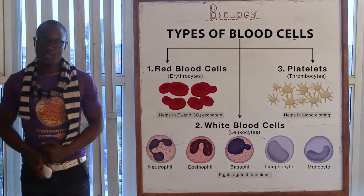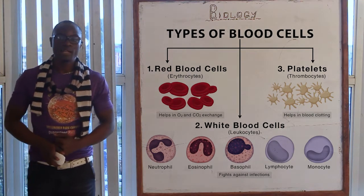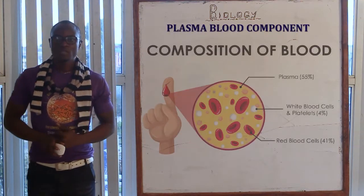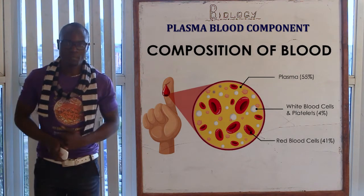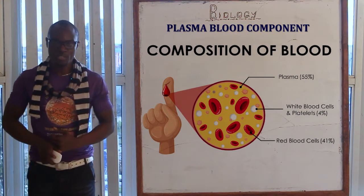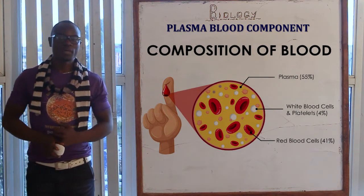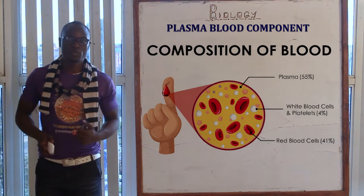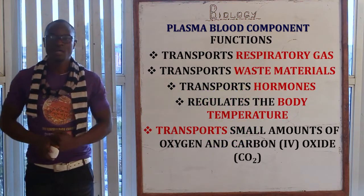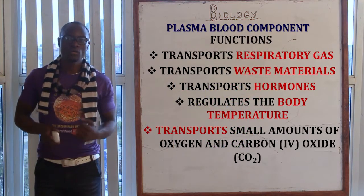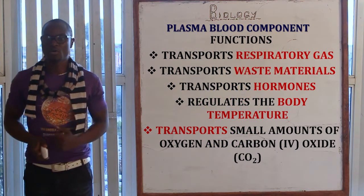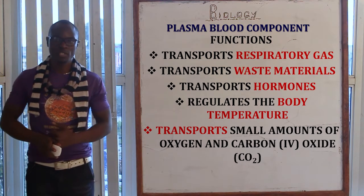Let's look at the first component of blood, which is the plasma. The plasma is the liquid component of the blood and it has the following functions. The plasma serves as a transporting medium for respiratory gases, waste materials, and also for the transportation of different hormones in the body.